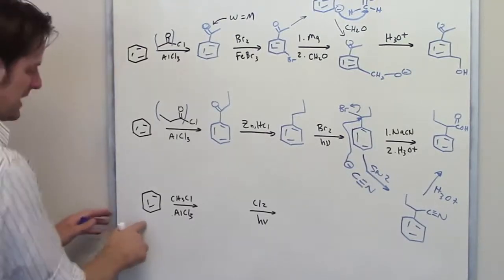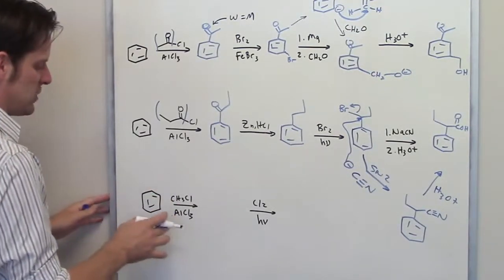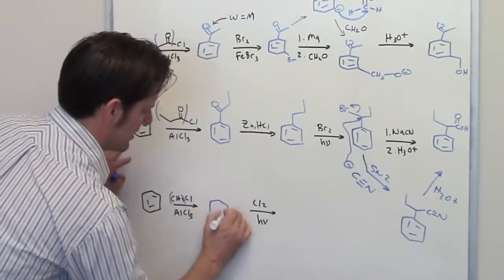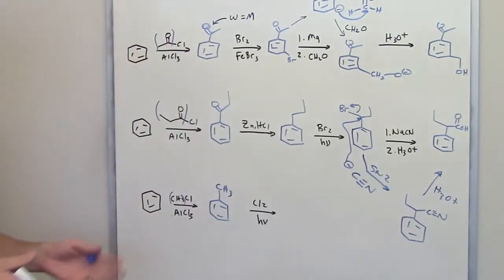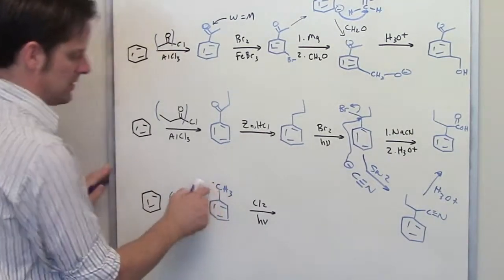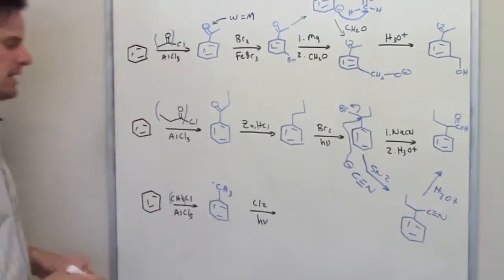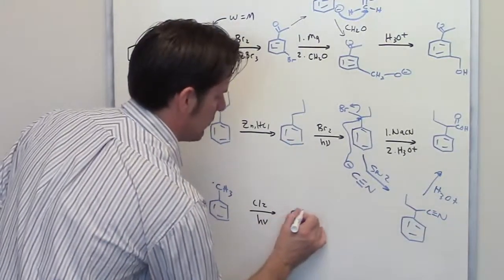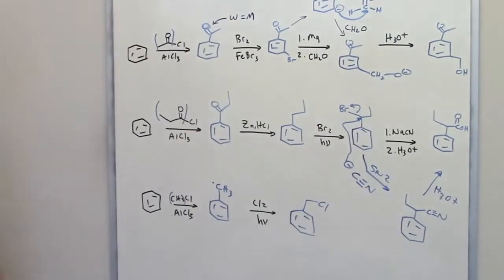Looking at the final sequence: I take a benzene ring and treat it with methyl chloride and aluminum chloride — Friedel-Crafts alkylation conditions, where the alkyl group is a simple methyl. That places a CH₃ onto the ring to give toluene. Then I treat that with chlorine and light, which behaves the same as bromine and light: it places a single chlorine on the benzyl carbon, which has at least one hydrogen on it. That gives the final benzyl chloride product. So that's the answer to each of these reaction sequences.